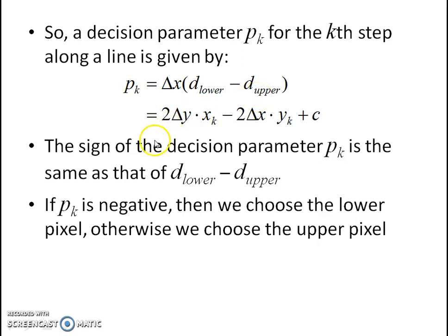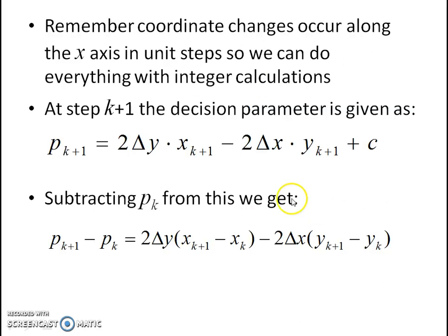The sign of the decision parameter pk is the same as that of d_lower minus d_upper. If the value of pk is negative, we will choose the lower pixel. If the value of pk is positive, we will choose the upper pixel. Remember, coordinate changes occur along the x-axis in unit steps, so we can do everything with integer calculations only.